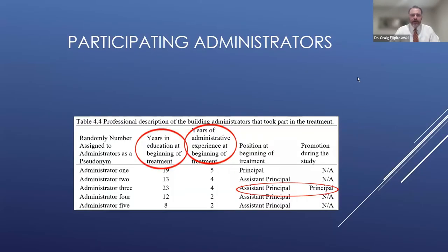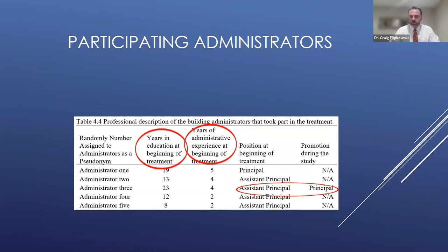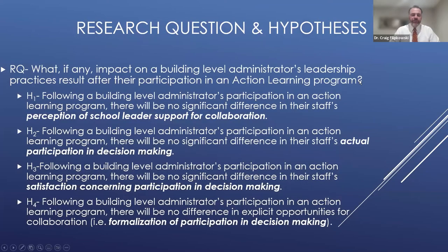The second bucket is the administrators. Years in education at the beginning of the treatment ranged from 8 to 23 years. The range of experience they had as administrators at the beginning of the treatment ranged from 2 to 5 years. Only one of the administrators changed in title over the course of the study — one who became a principal over that particular summer.